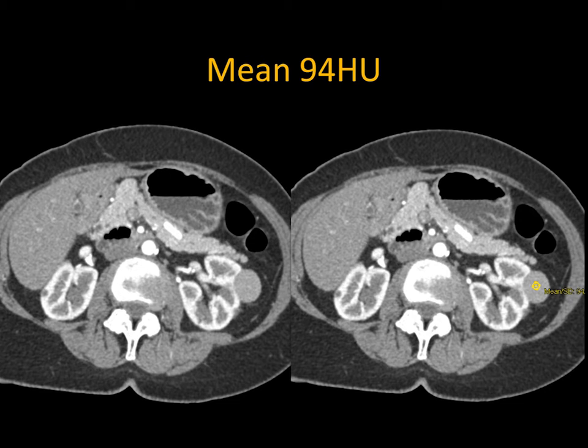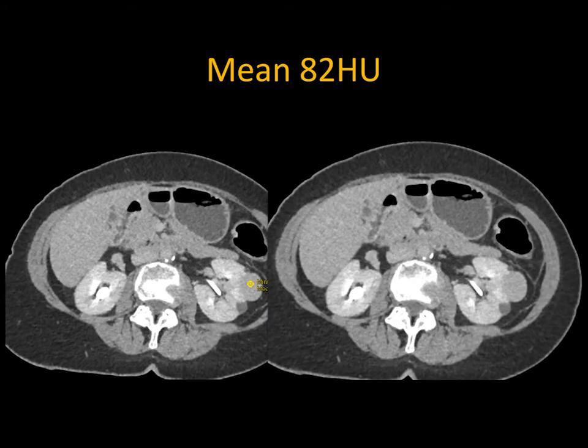Bring the patient back and do a non-contrast scan. On delayed phase imaging, that same patient would measure 84 or 82 Hounsfield units. But again, if you only saw this, you'd say papillary renal cell carcinoma. A good hint: if you see the same density on non-contrast and arterial, or non-contrast and delayed — same density — then you know it's not enhancing, and therefore it's a high-density renal cyst. You need two phases. Very important.